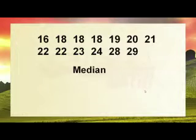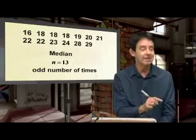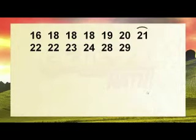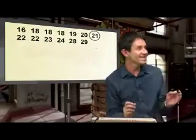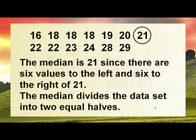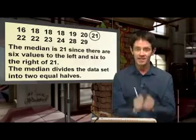The median is the middlemost score. There are 13 values, which is odd, so the median is part of the set. I'm going to circle the median — it stands out. To the left of the median are six scores, and to the right are six scores. The median is 21, since there are six values to the left and six to the right. The median divides the set into two equal halves.